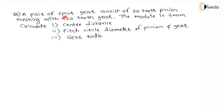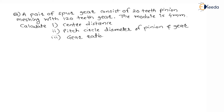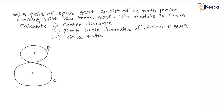The question is: a pair of spur gears consists of a 20-teeth pinion meshing with a 120-teeth gear. The module is 4 mm. The pinion is the smaller one and the gear is the larger one.